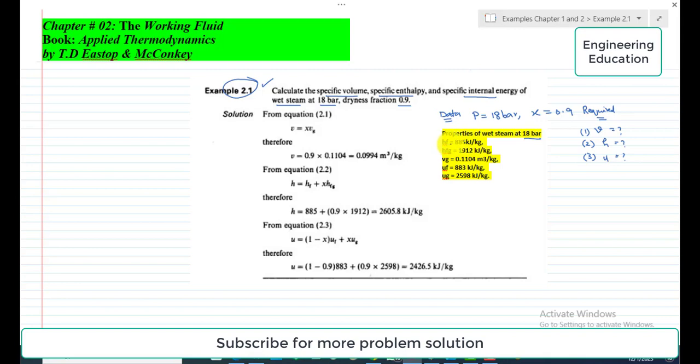Similarly, hfg is the specific enthalpy of the steam in between the saturated liquid line and saturated vapor line, which is 1912 kilojoules per kilogram.